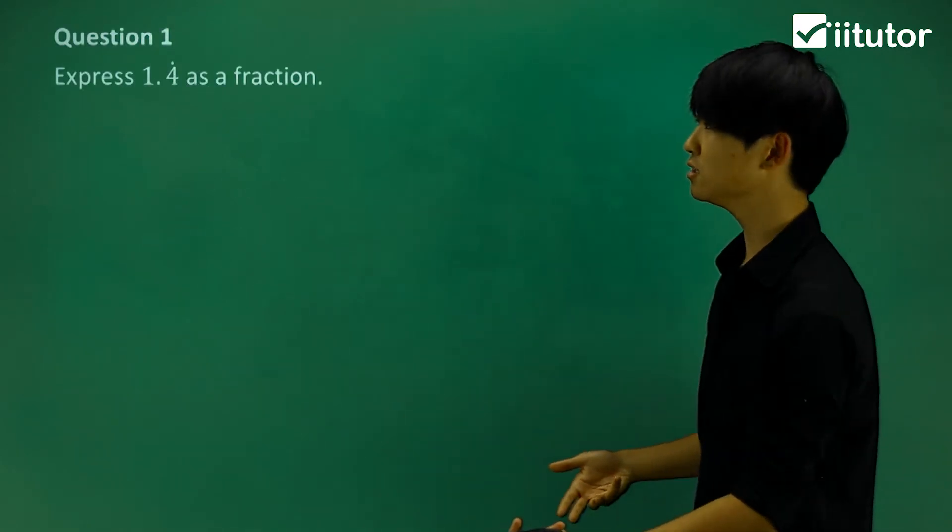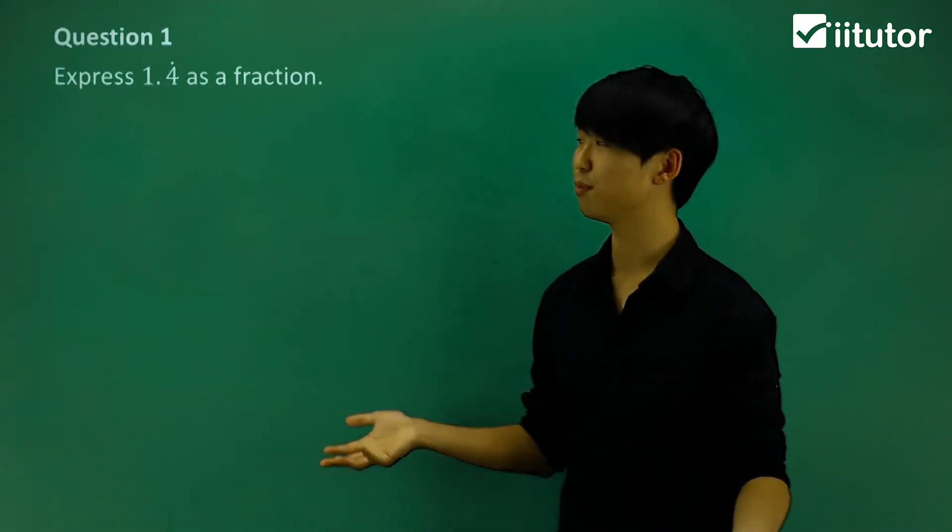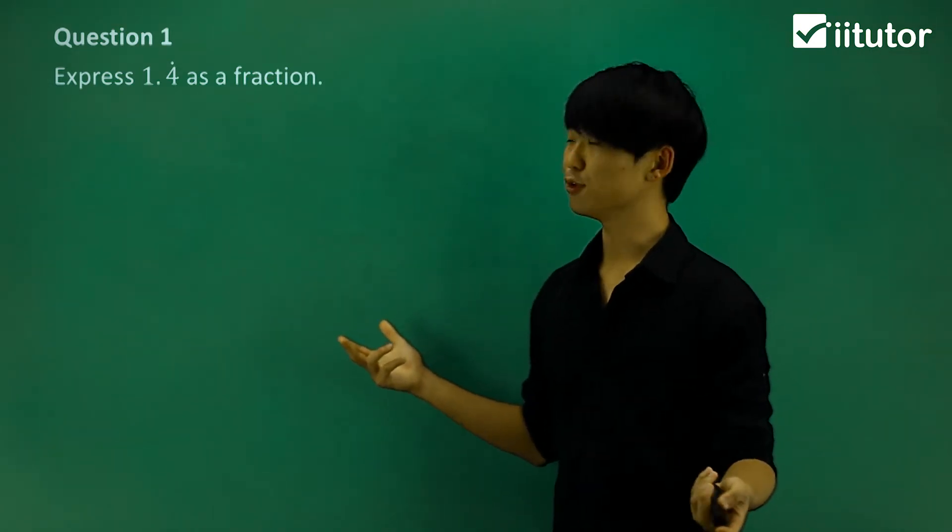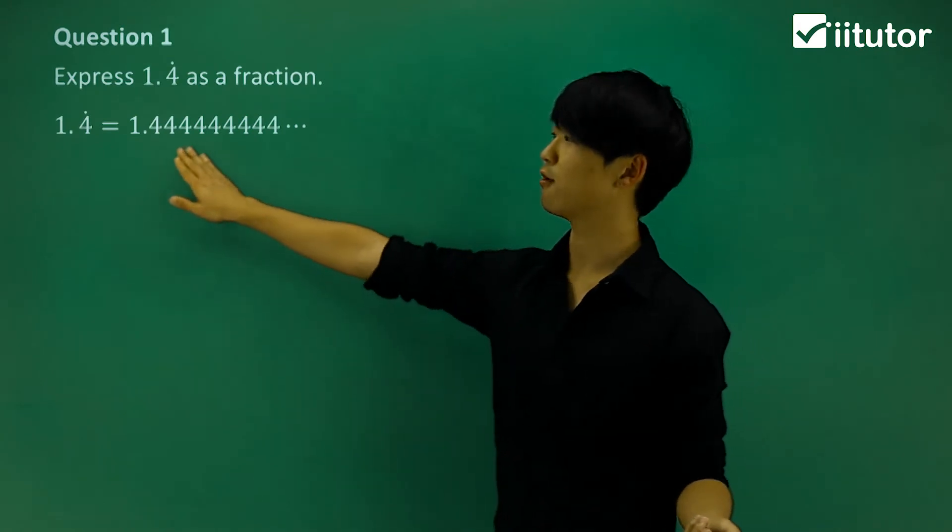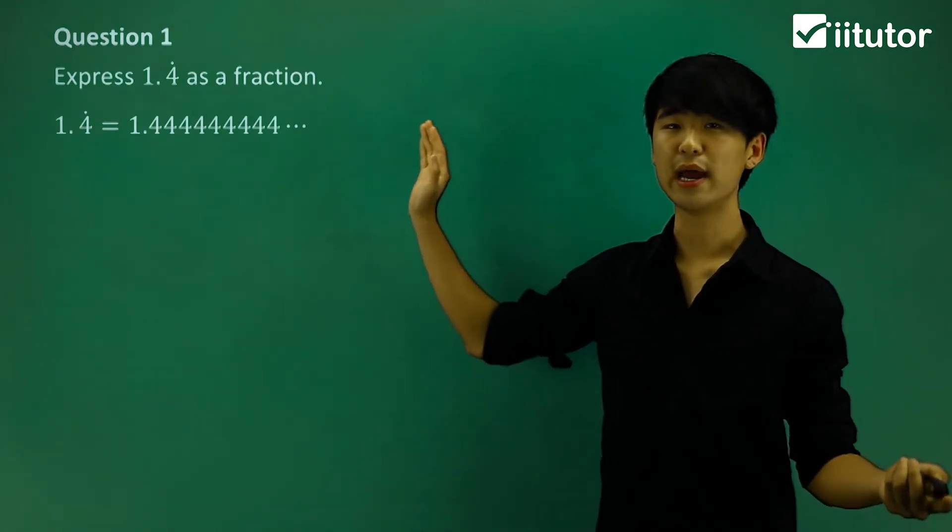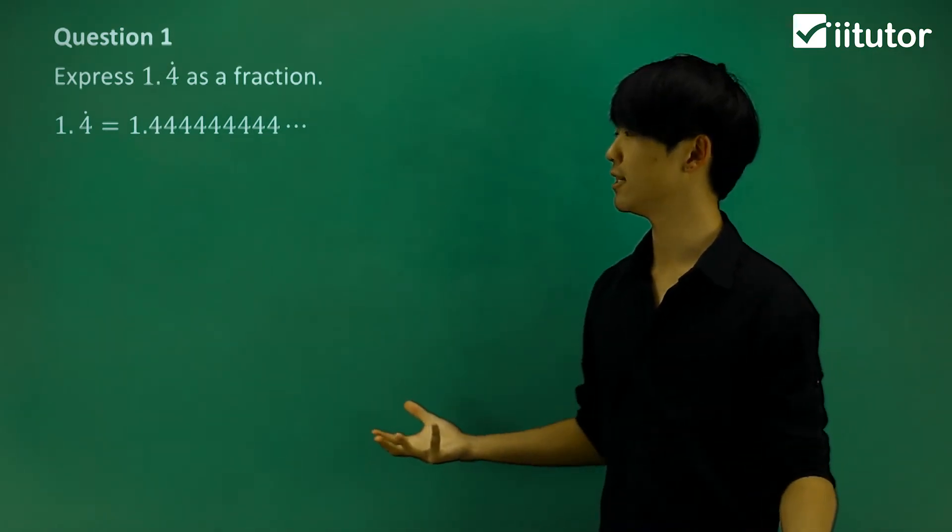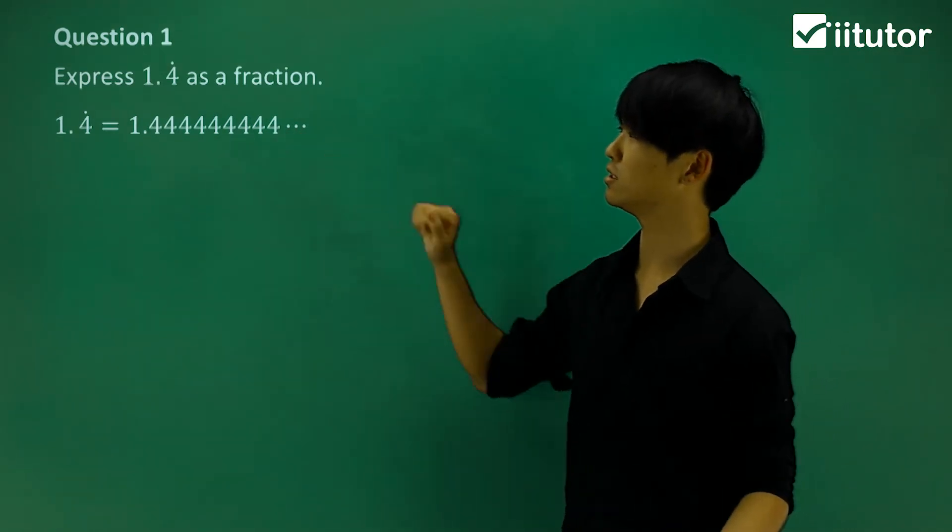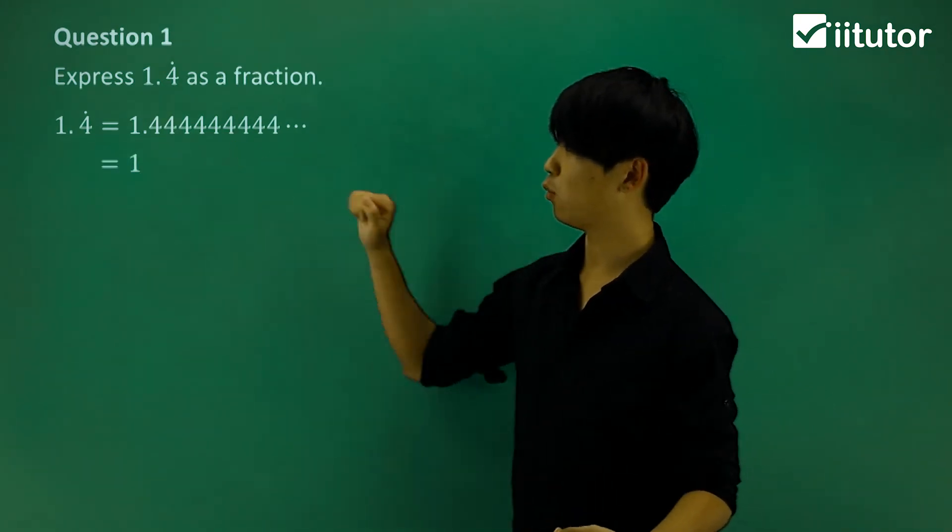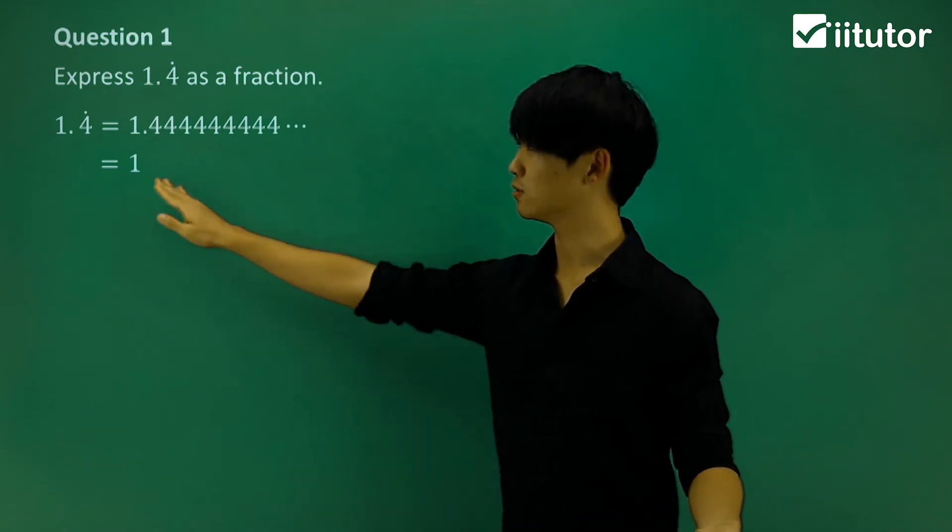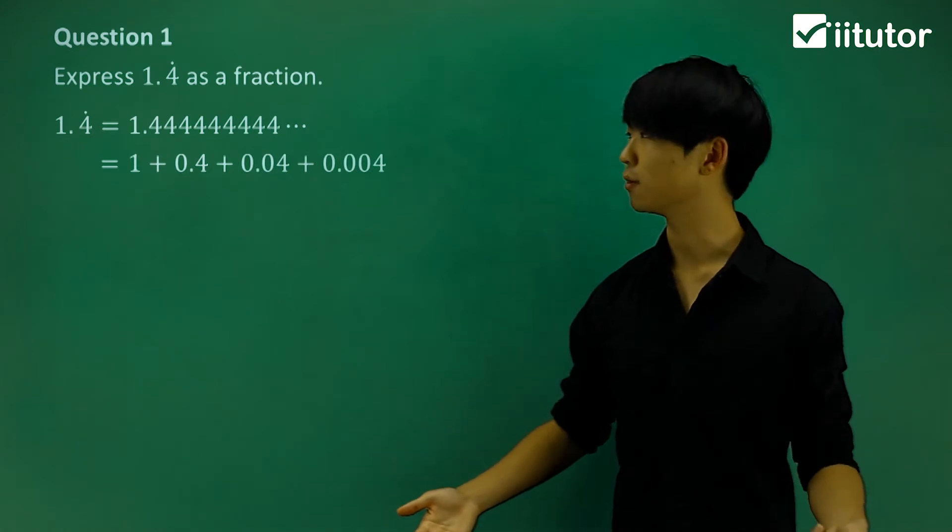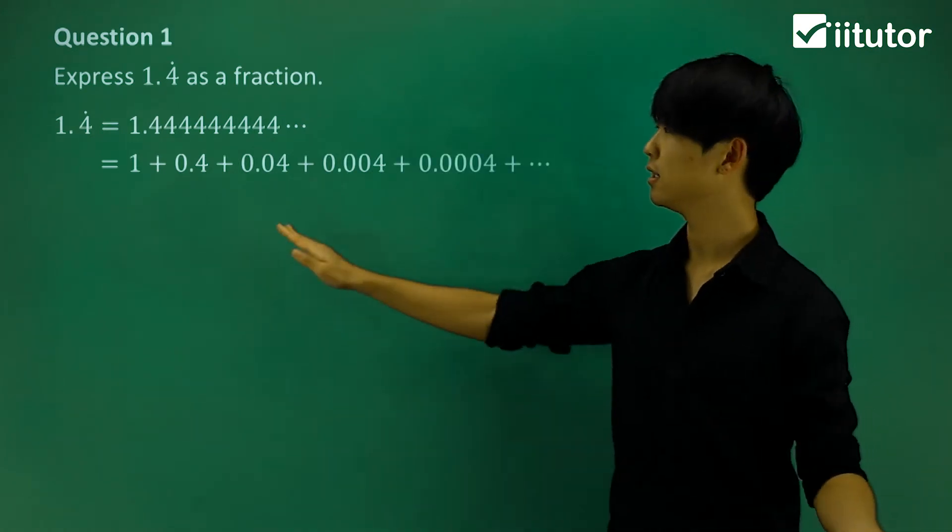So if we take a look at the questions. Now in question one, it says express 1.4 recurring as a fraction. So if I want to do that, 1.4 recurring is another way of writing 1.4444 all the way. Now again, we want to try and use the fact that we know how to find the limiting sum to express this as a fraction.